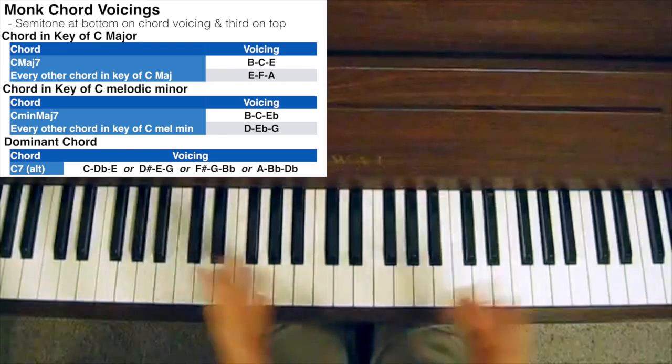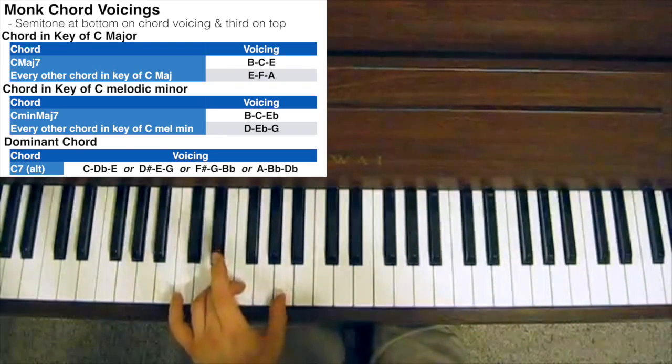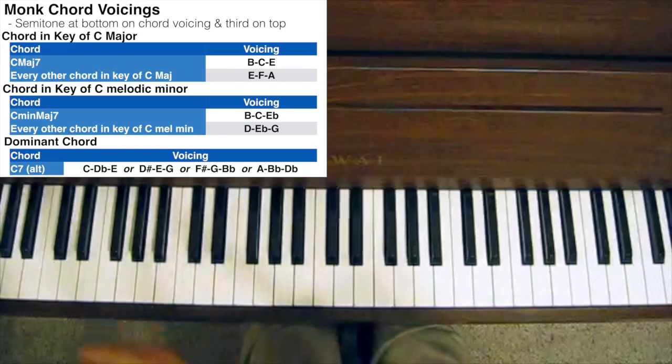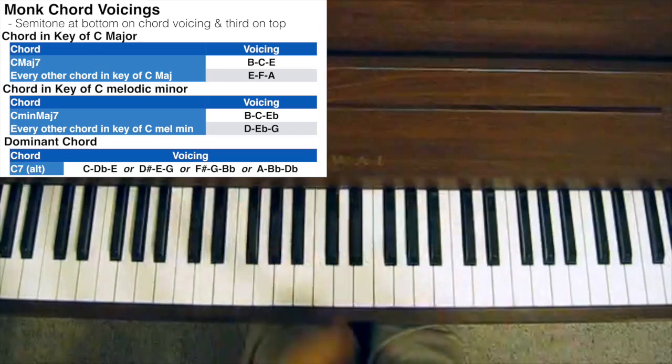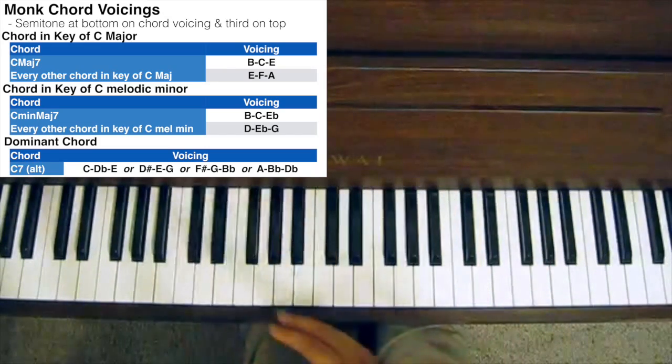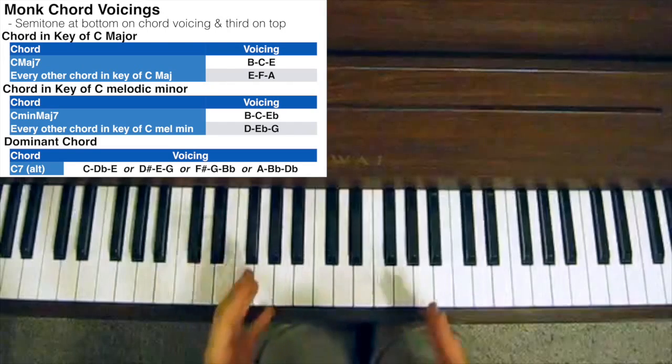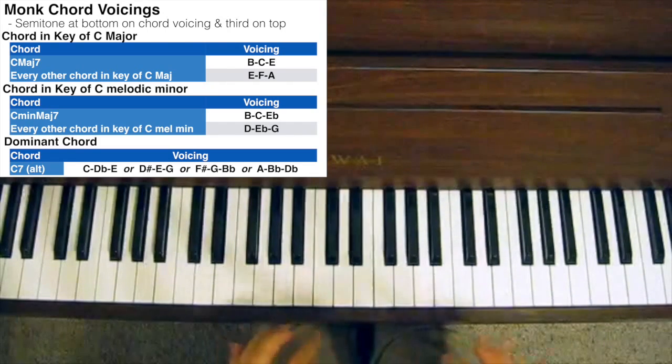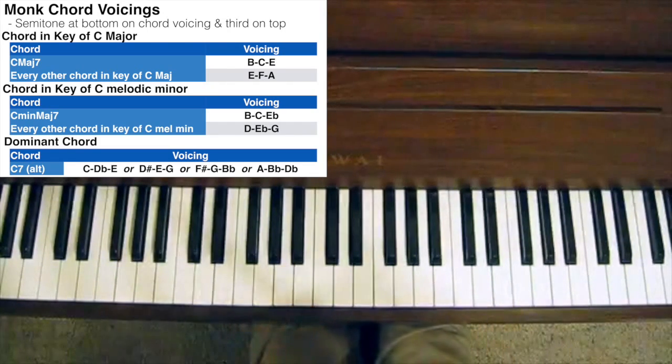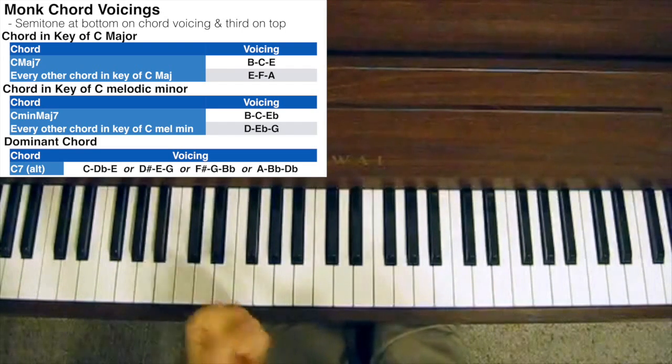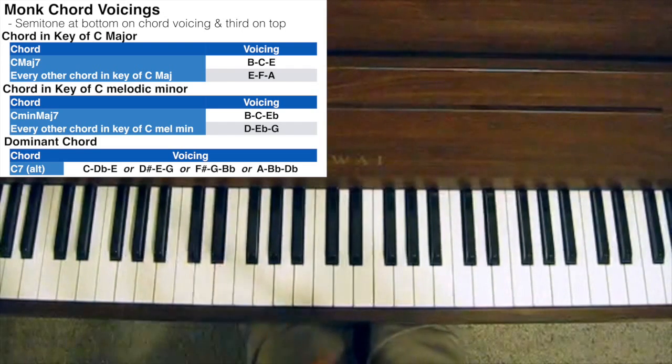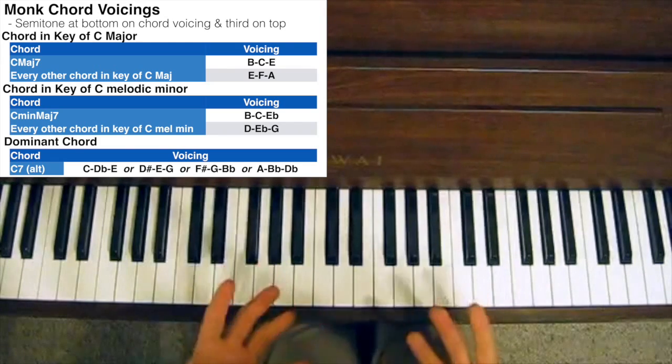While you probably wouldn't use the Thelonious Monk voicing all the way through a 32 bar song indiscriminately without changing, it's a good voicing to know in the grand scheme of things. When you throw it in with, say, rootless chord voicings or so what chord voicings, you can then throw in a Thelonious Monk type voicing and create a bit of tension, a bit of bite in your chord voicing and make it sound interesting.